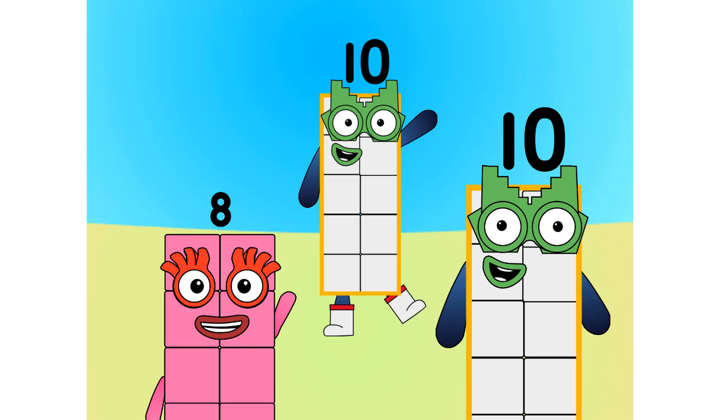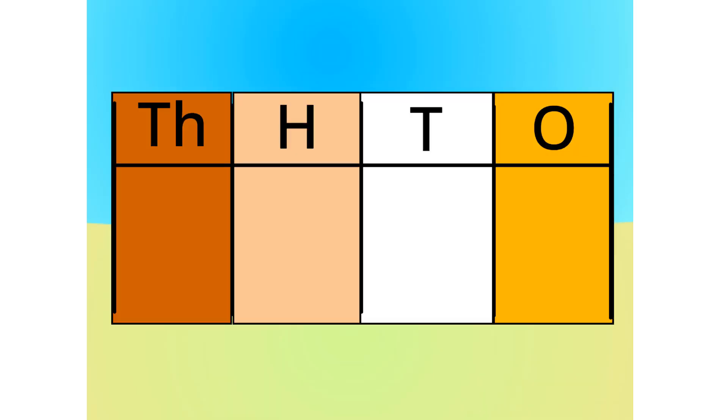Let me show you all why we count in base 10 in a few different ways. First off, the number table. Let's do 1,987 for example. Do you see anything that relates to this number?